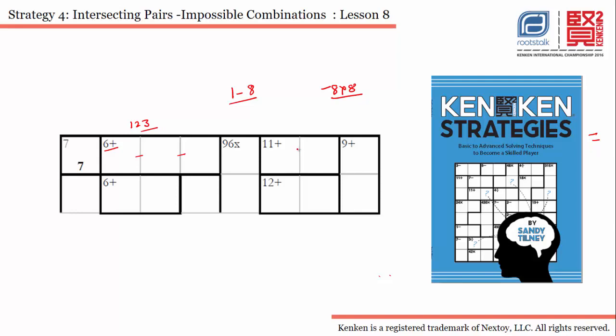Let's take this one. Now we have 11+. Possible combinations are 5-6, 7-4, or 8-3. But this option is impossible because we already have 3 in this particular cage, so 3 is already there in this row.